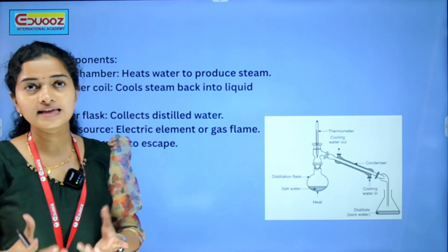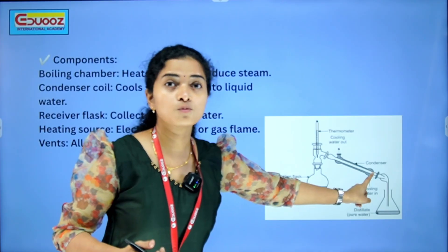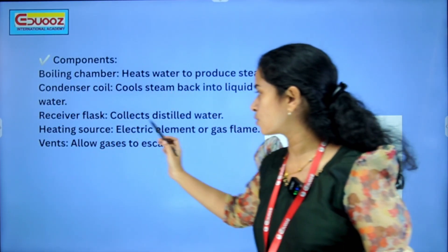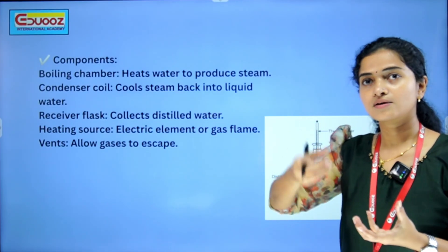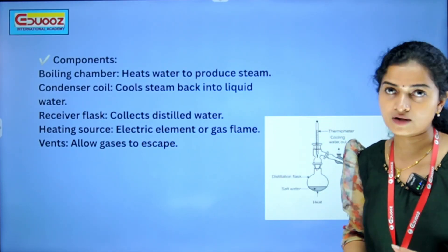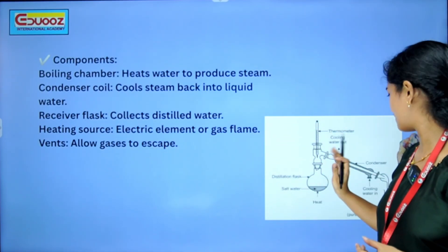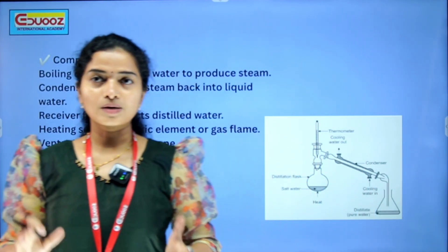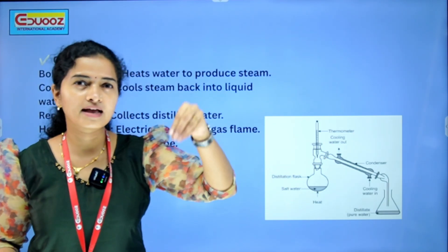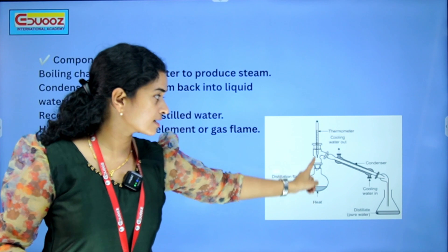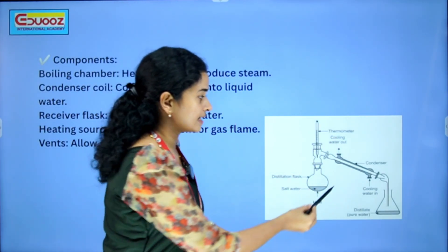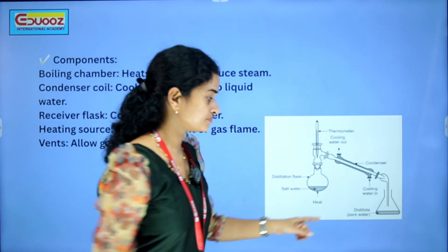You also have a receiver flask that collects the condensed water. There is also a heating source — water is heated, and that heat drives the steam through the condenser. The heating source can be electric or a gas flame. There are also vents that allow gases to escape. Other components include a distillation flask and a thermometer.